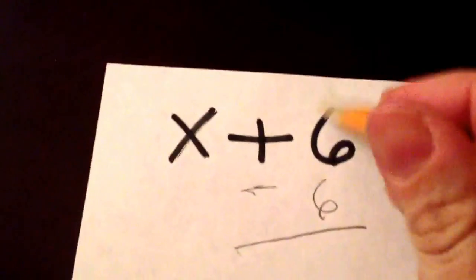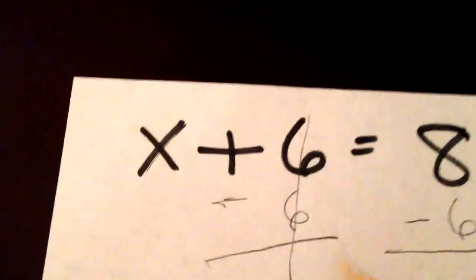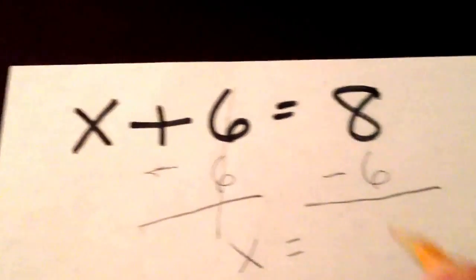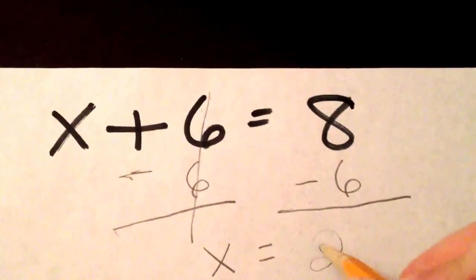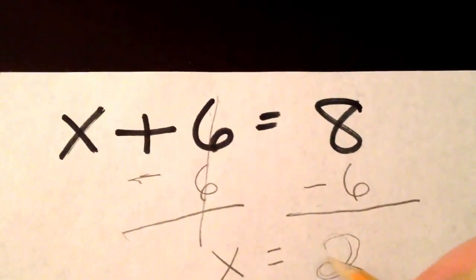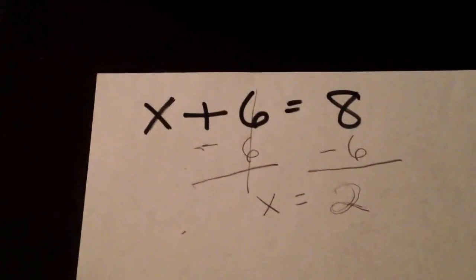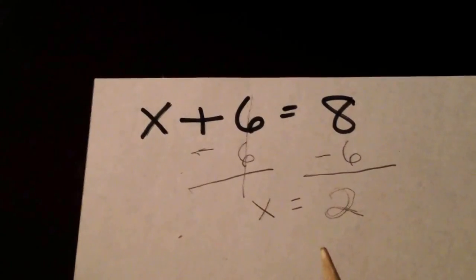And here, this cancels out. So we just have x remaining. x equals and then 8 minus 6 is 2. So our answer is x equals 2.